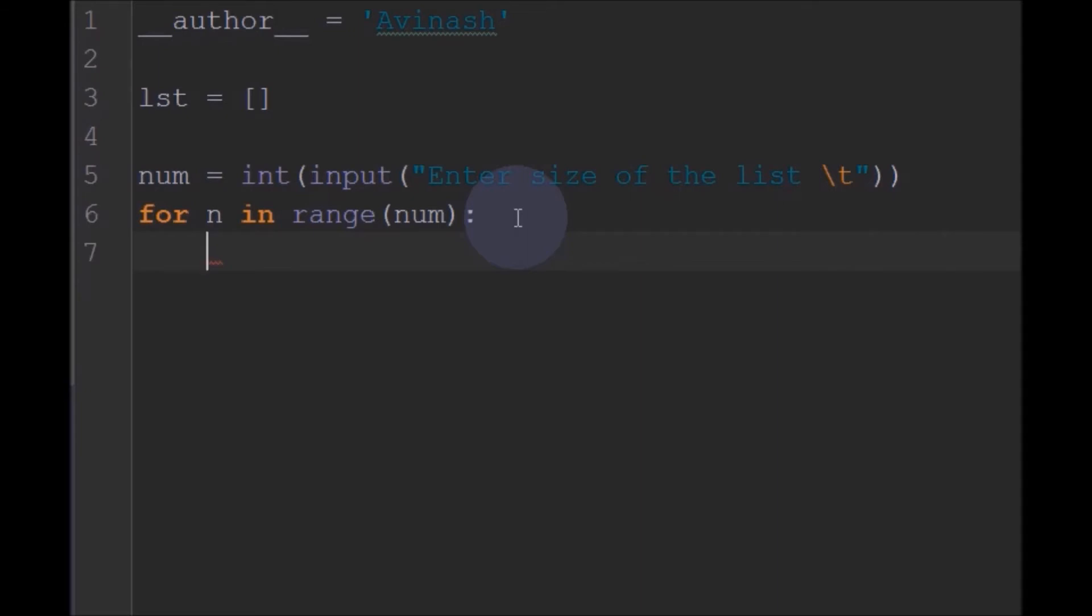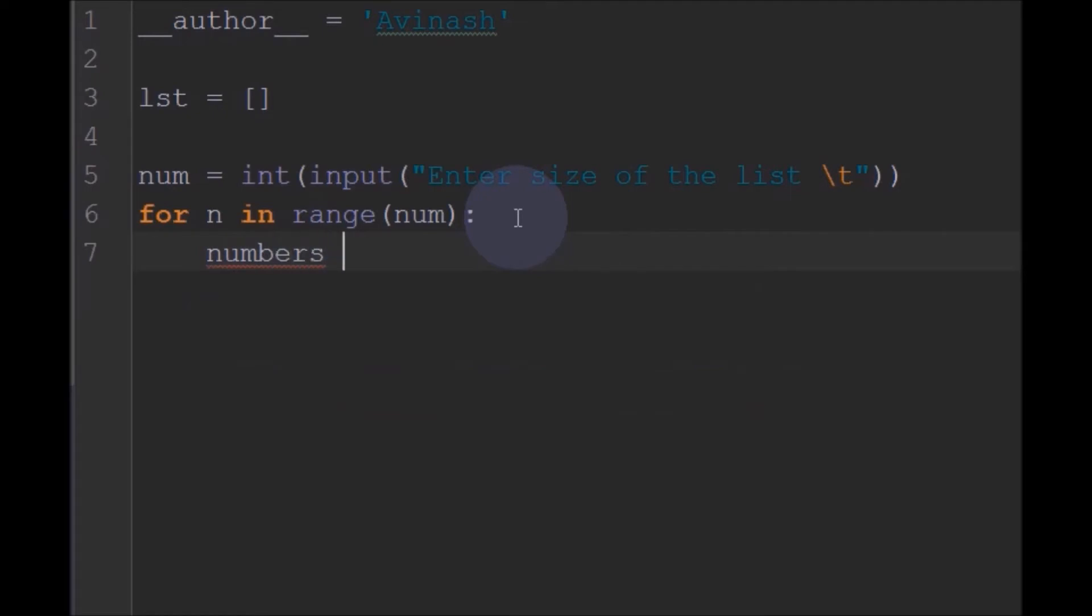So I will create this as numbers equal to, and also ask the user to enter any number. So this will be cast to integer. So after entering the numbers, I need to append these numbers to that list. list.append random numbers. So I have appended all the numbers. So all the numbers which the user has entered are into this list.